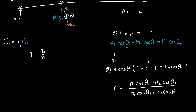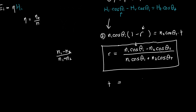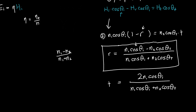Solving these two equations gives the Fresnel reflection and transmission coefficients. R equals [n1 cos(theta_I) minus n2 cos(theta_T)] divided by [n1 cos(theta_I) plus n2 cos(theta_T)], and T equals 2n1 cos(theta_I) divided by [n1 cos(theta_I) plus n2 cos(theta_T)]. This looks exactly like the normal incidence result — n1 minus n2 over n1 plus n2 — but with cosines added. Plugging in theta_I = 0 recovers exactly what we had before.